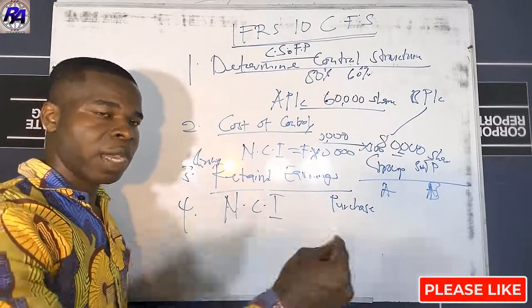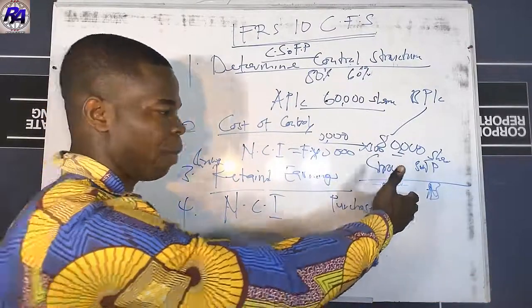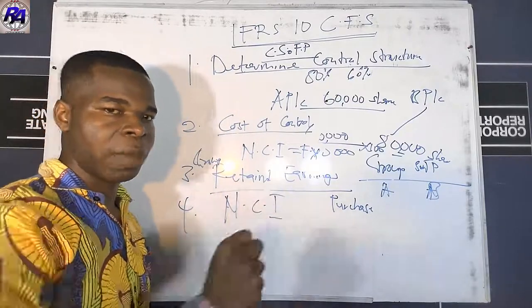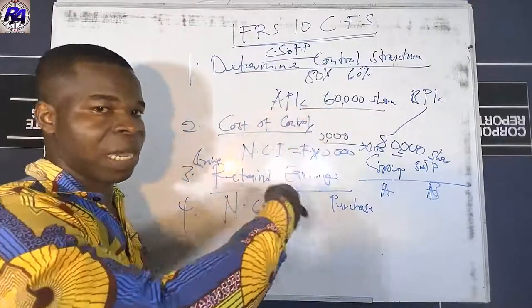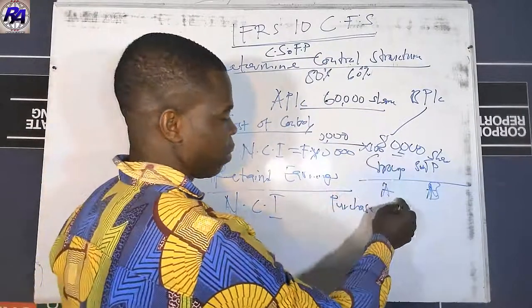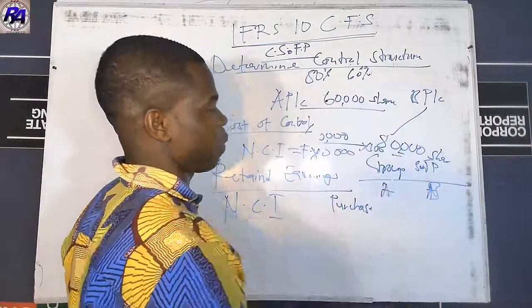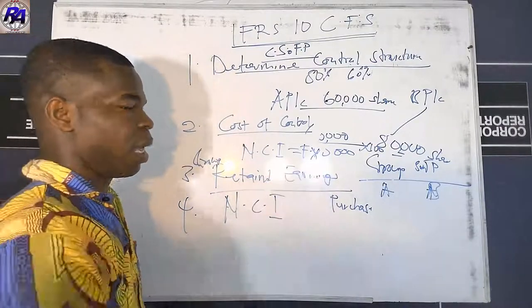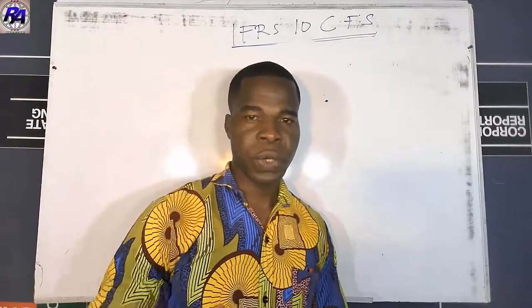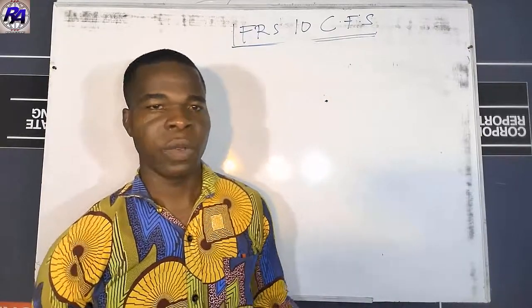The question — available at the video description — states that P acquired 70% of X on 1st January 2021 for $450,000, with retained earnings of X being $50,000 at that date. It is the policy of P to recognize non-controlling interest at the date of acquisition at the proportionate share of net assets.